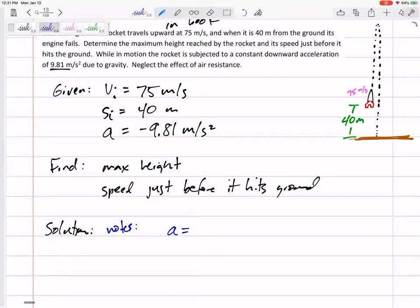Acceleration is a constant 9.81 meters per second squared. So what does that mean? I can use constant acceleration equations, which I love, right? No integrals, no derivatives. Let's just use those constant acceleration equations.